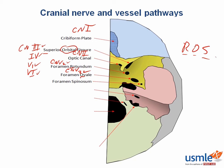The posterior cranial fossa structures pass through the temporal bone or the occipital bone. In the temporal bone, we have the internal auditory meatus, where cranial nerves 7 and 8 pass through. The jugular foramen is at the border of the temporal and occipital bones, and cranial nerves 9, 10, and 11 pass through here.